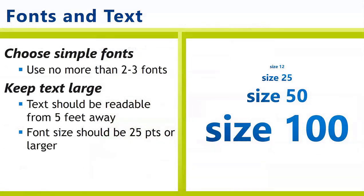The next thing to consider is your font sizes. You want to choose simple fonts and not use more than two or three styles of fonts — otherwise it can get pretty messy. You also want to keep your text very large. Text should be readable from five feet away. To accomplish this, the smallest text on your poster should be 25 point font or larger. For your title and headings, you might use a font size like 150 or even 180. For posters, usually bigger is better.